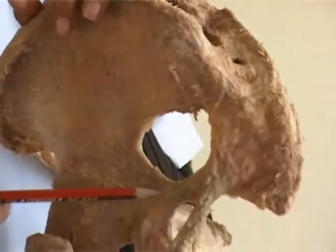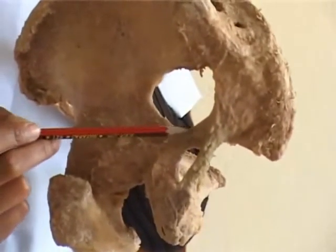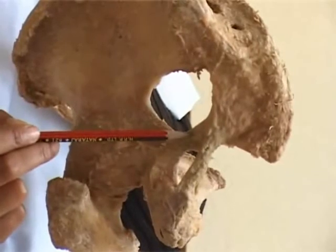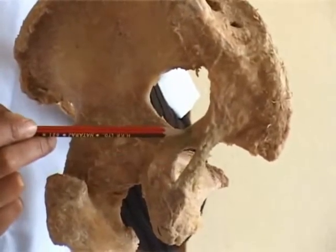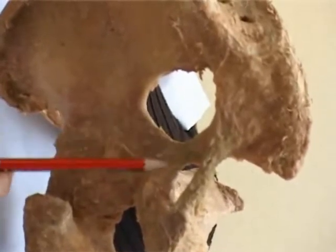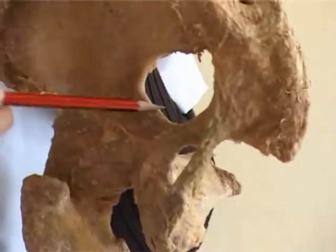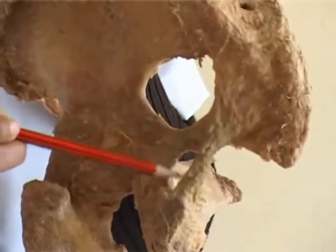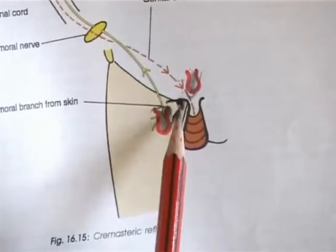Extending from the ischial spine is a horizontally placed ligament, the sacrospinous ligament. The sacrotuberous and sacrospinous ligaments convert the greater sciatic notch and lesser sciatic notch into the greater sciatic foramen and the lesser sciatic foramen.